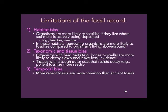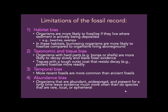Temporal bias: fossils that are more recent are more common than ancient fossils, because the more ancient ones are more likely to have gotten broken up. Abundance bias: organisms that were abundant, widespread, and present for a long time are likely to leave many more fossils than species that are rare, local, or ephemeral — meaning they don't stay for very long.